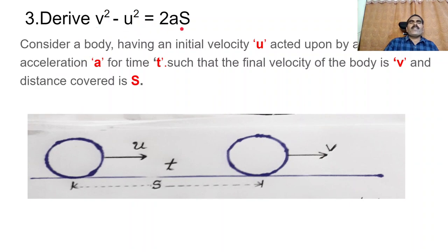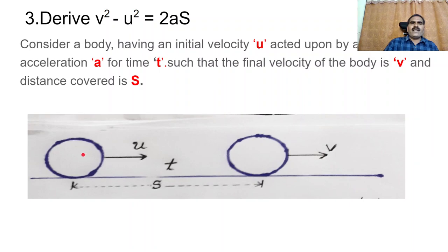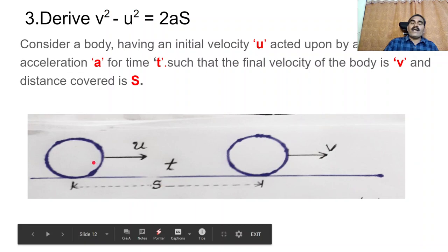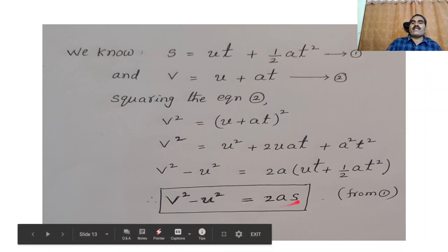To derive this equation, consider a body having initial velocity U, acted upon by an acceleration A for T seconds, such that the final velocity is V and the distance covered is S. Let U be the initial velocity of the body, acted upon by uniform acceleration A. Let V be the final velocity after T seconds, and let S be the distance travelled in T seconds.